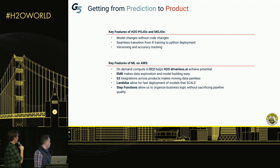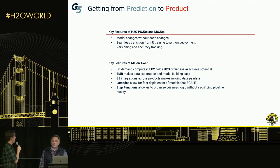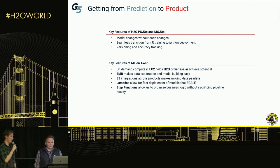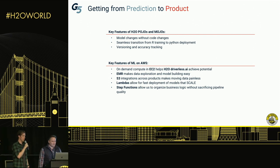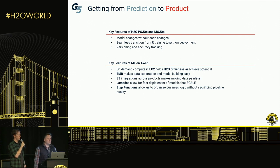Just to call out some key features of H2O, POJOs, and Mojos — even just a year ago these were kind of new and really exciting, and they still are — that really helped us get things out there. We can do model changes without code changes. We're actually loading these models — the Word2Vec and Mojos out of Driverless — at runtime out of S3. We've got some Python and Java in each case that goes out to S3, pulls in the model, loads it, and runs it. So if we need to iterate quickly, we can just drop a new POJO in S3 and then we're using that model to predict.